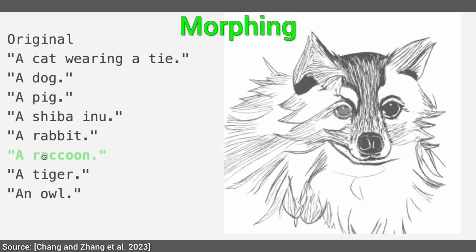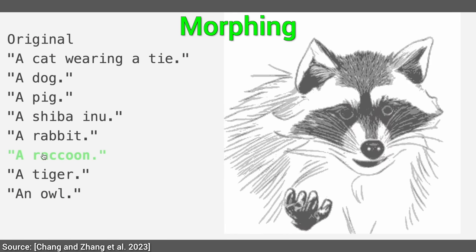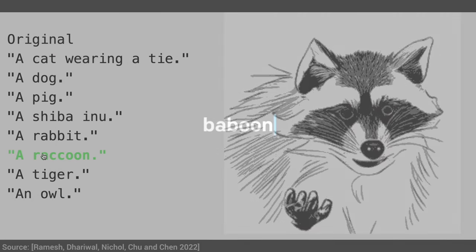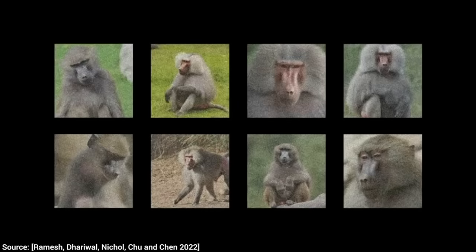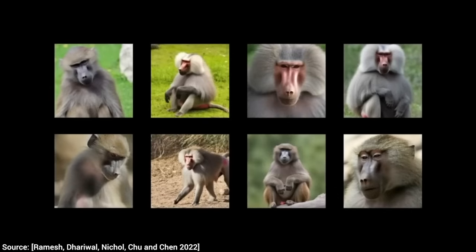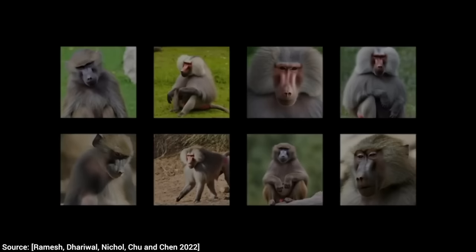What is text-to-image? Simply, these are AI-based techniques where a text prompt from us goes in and a beautiful image comes out.